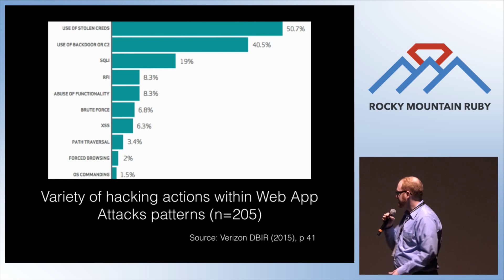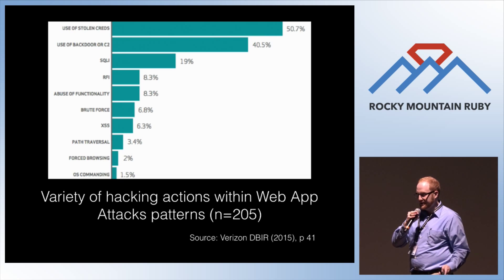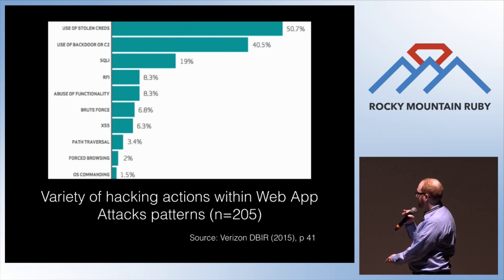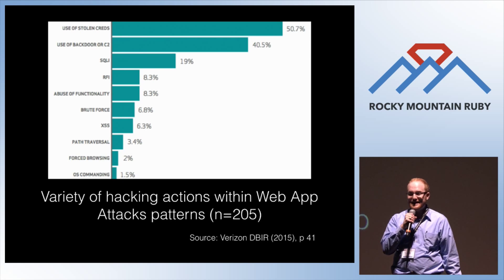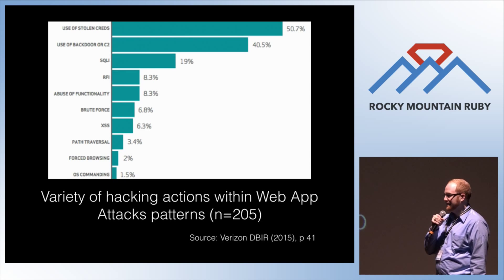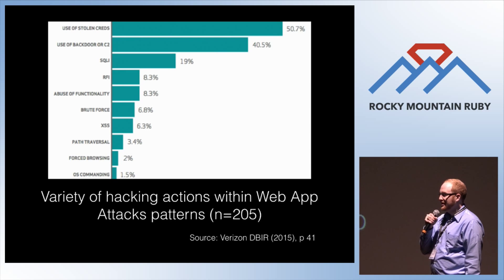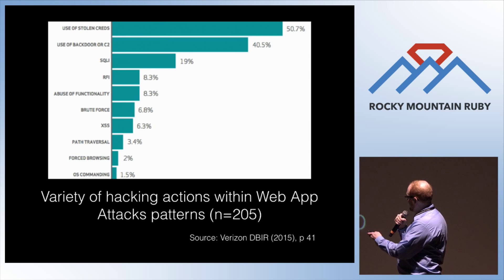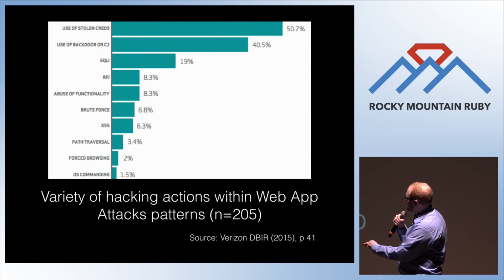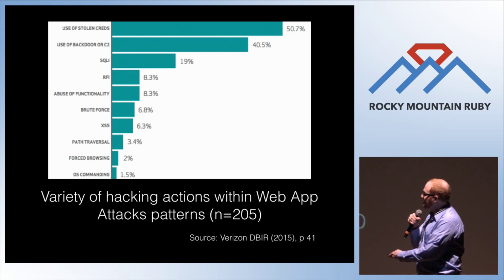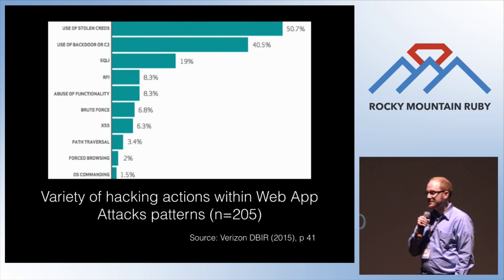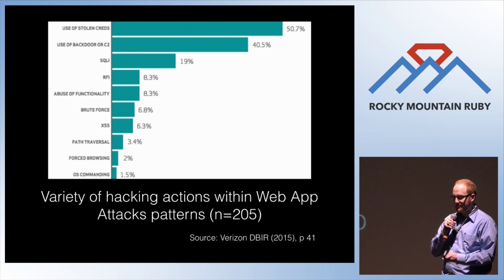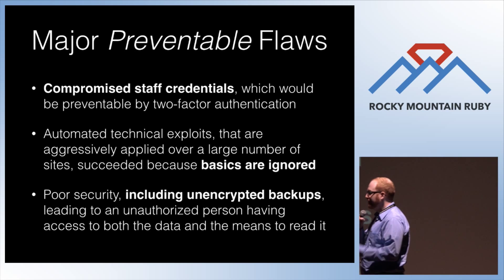Someone's password got stolen, especially staff members, and that led to the breach of confidential information. We also see backdoors, SQL injection, forced browsing, and cross-site scripting — these are much smaller percentages. So if we solve the authentication problem, a large number of these real-world breaches would not have happened, especially with two-factor authentication for staff members. These are major preventable problems.